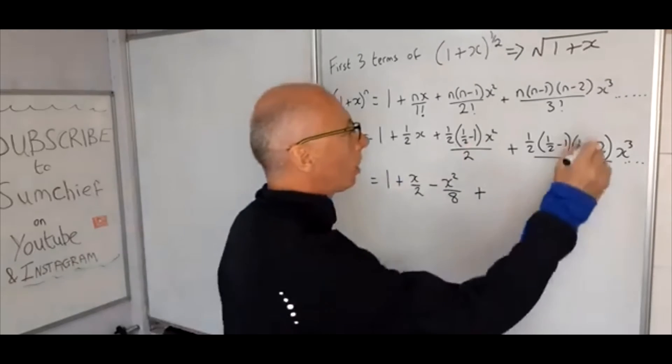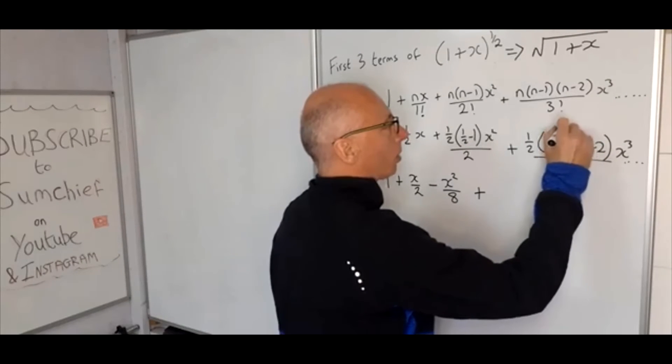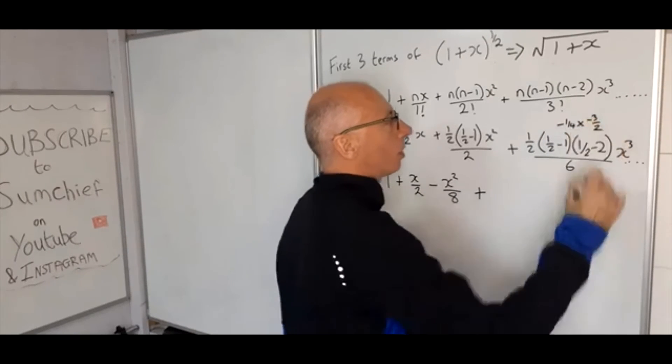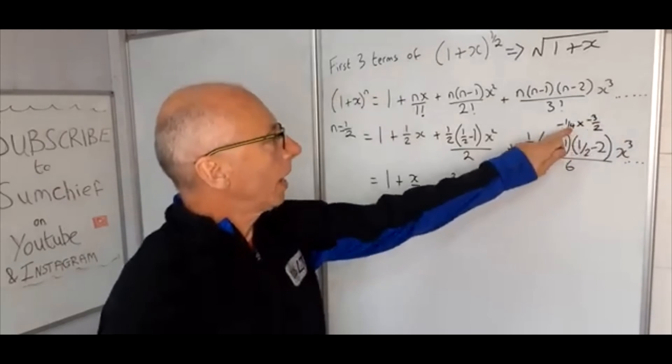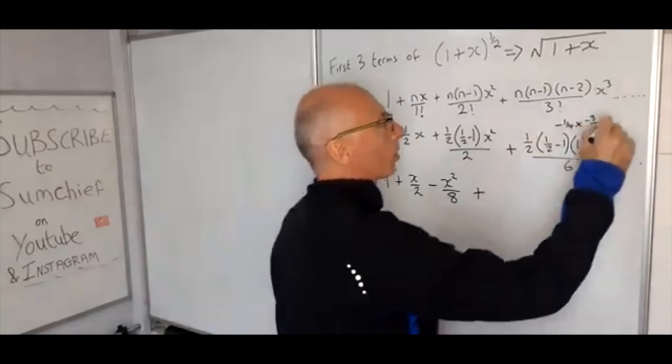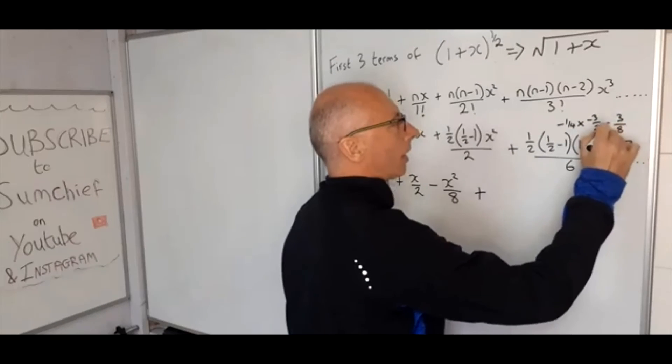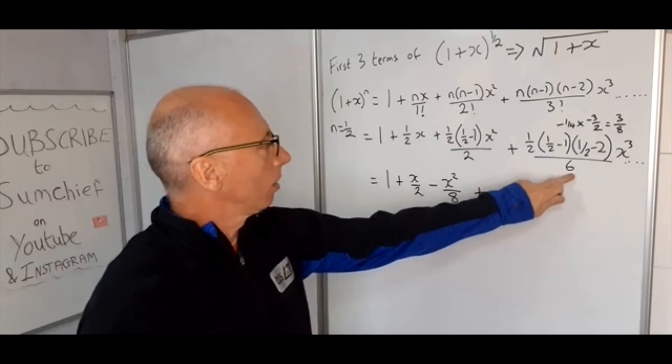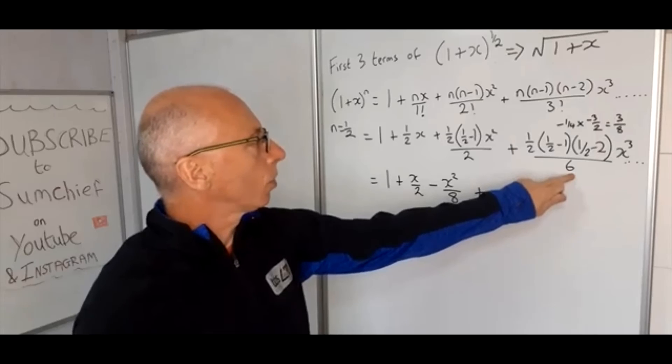And then minus 3 over 2. So we've got minus 1 quarter times (half minus 2) which is minus 3 over 2. So if we multiply that out now we'll get plus 3 over 8, and then divide that by 6, we'll get 3 over 24, so 3 over 48.